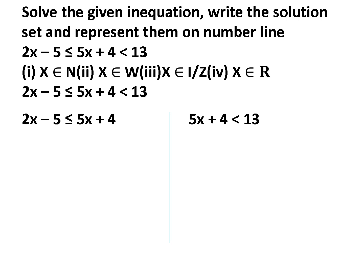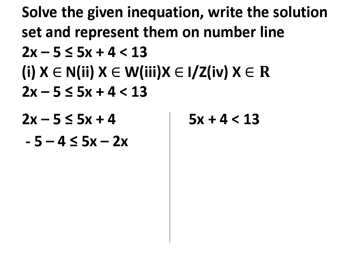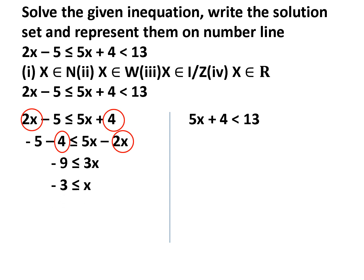Whenever we solve any inequation, we take care to shift x in such a way that we get x positive. So we shift 2x from the left-hand side to the right-hand side, and shift 4 from the right-hand side to the left-hand side. Simplifying gives us minus 9 less than or equal to 3x. Dividing both sides by 3, we get minus 3 less than or equal to x.